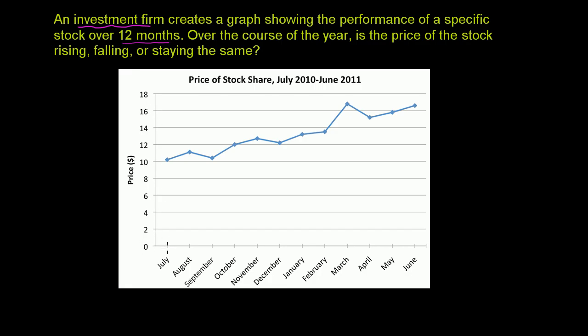So for example, in July, the price of this stock was a little over $10. Then in August, it moved up to around $11. And then we could keep going month by month.